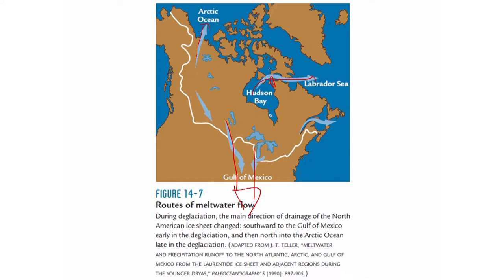At some point that ice dam broke, and a huge pulse of water that was dammed behind that ice bridge rushed into the Labrador Sea and the Greenland, Iceland, and Norwegian seas. You can imagine what happens if you put a substantial amount of fresh water in that region: you are essentially going to reduce the density of the water so much that for the same amount of evaporation, you will not be able to produce as much deep water. And if that water does not sink, you do not bring as much warm water north with the Gulf Stream current. That circulation change is going to allow the whole system to re-freeze.